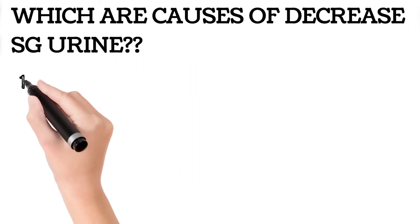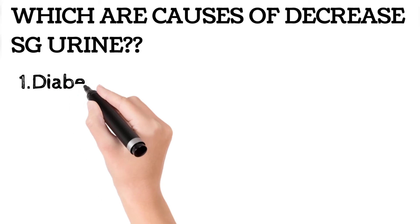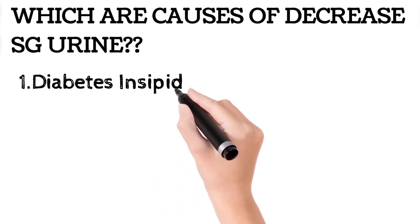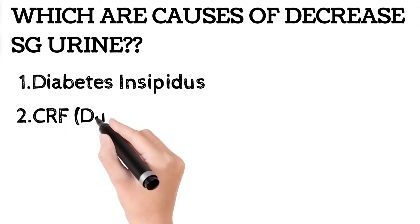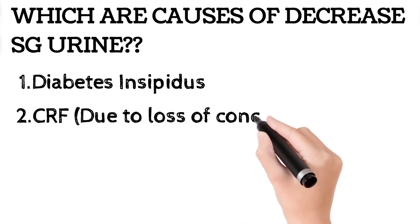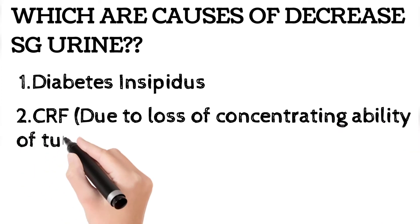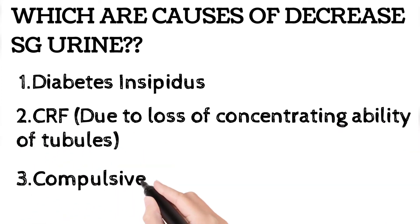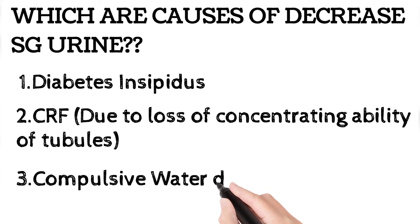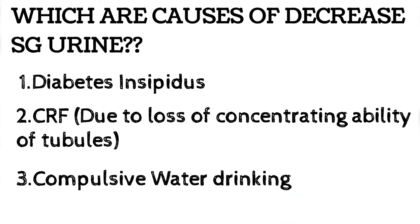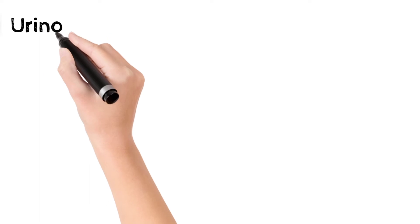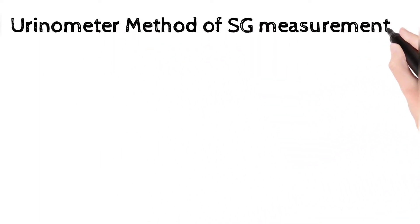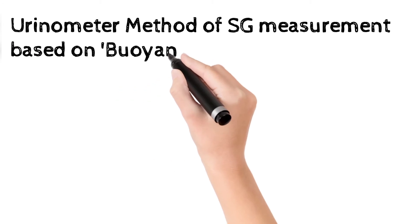Exactly the opposite are the causes of decreased specific gravity of urine — conditions where solute is less and water is more. The first example is diabetes insipidus. The second is chronic renal failure, in which the concentrating ability of the tubules is totally lost, causing decreased specific gravity. Finally, excessive water drinking can also decrease specific gravity.